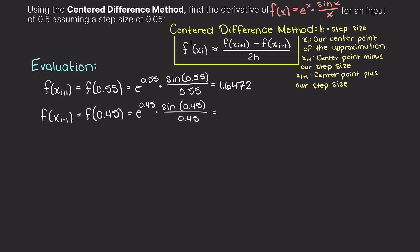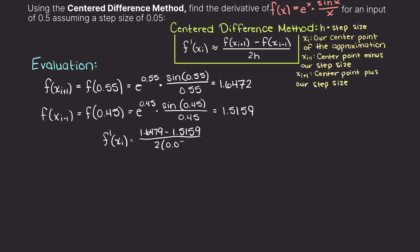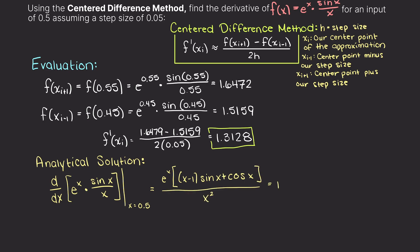Now we can plug these values into our Centered Difference equation and we find that the derivative at 0.5 of this function is approximately 1.3128, which is extremely close to our analytical solution as you can see here.